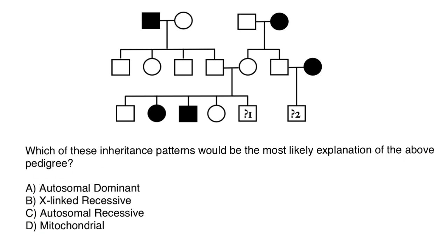Here are the variants to choose from. The first variant: autosomal dominant. Why is it not autosomal dominant? If this affected person would have genotype capital A and small a, the dominant allele here means defective allele, because this is a dominant genetic disorder.